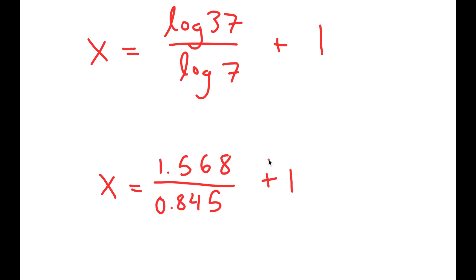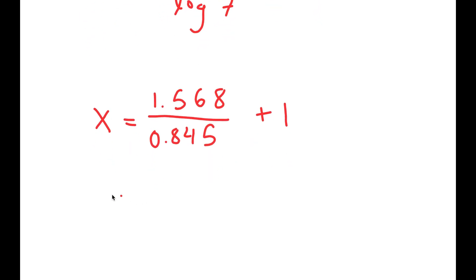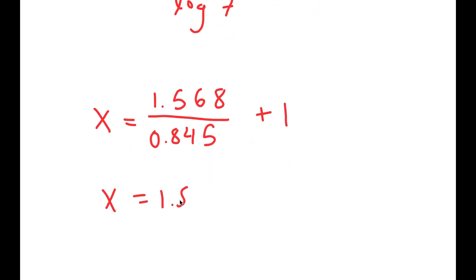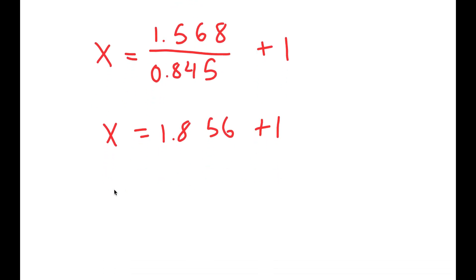So now, log of 37 over log of 7 is equal to 1.856. So I have this plus 1, which is equal to 2.856.